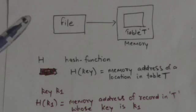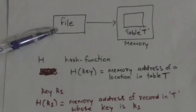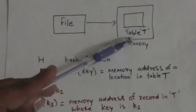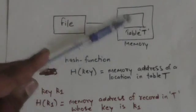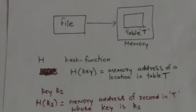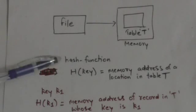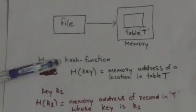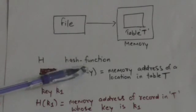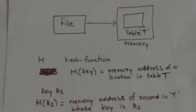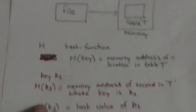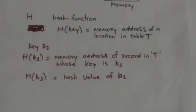Another searching technique is hashing. In hashing, it is assumed that a file of N records is maintained in memory as a table T. A function h, which is called the hash function, is used. It maps the key into a memory address of a location in table T, and this address is also called the hash address.